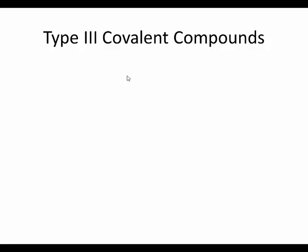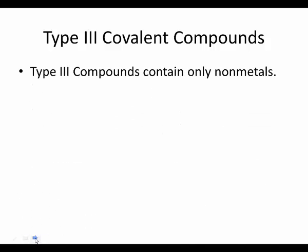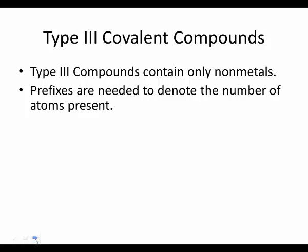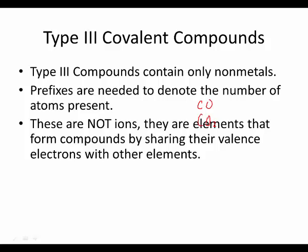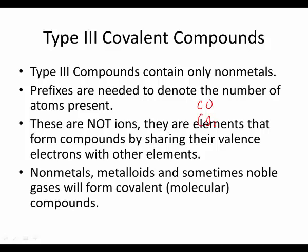Type 3s are called covalent compounds. They're not ionic, which means there will not be ions. They are sharing electrons in the bond between the atoms. Type 3 compounds contain only nonmetals — the right-hand side of the periodic table — and sometimes the metalloids. But there will be no metals at all. Prefixes are needed to denote the number of atoms present, because there are multiple ways for nonmetals and metalloids to bond with each other. Since they're not made of ions, you don't have those charges telling you how many you need. These elements form compounds by sharing their valence electrons instead of gaining and losing.